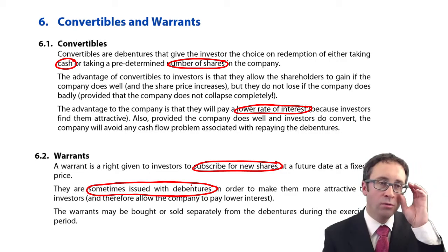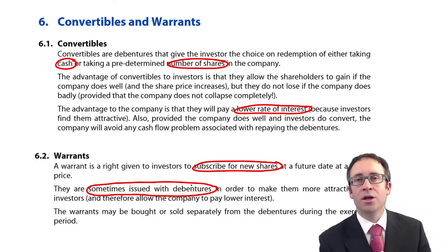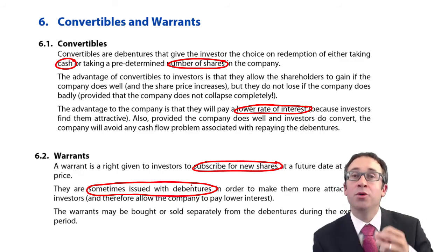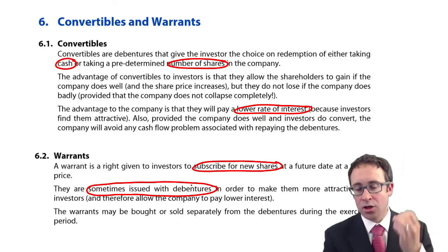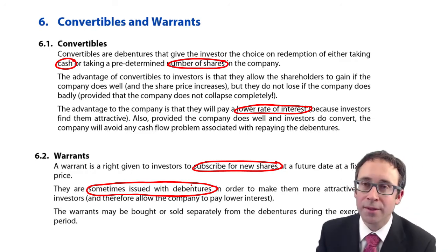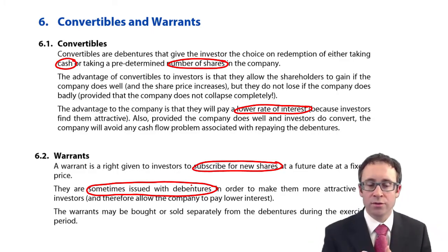The warrant is an option given to investors to buy shares in the future. And the reason why people get confused is because they are sometimes issued with debentures. So there will be debentures or loan stock issued with warrants. So you still get your cash back as part of the debenture. But you also then get the opportunity at a fixed date in the future to buy some shares as well.